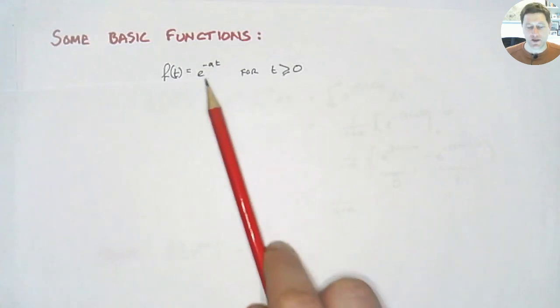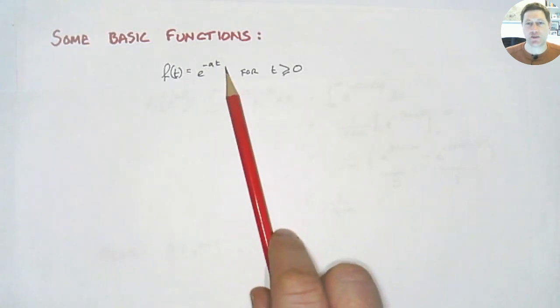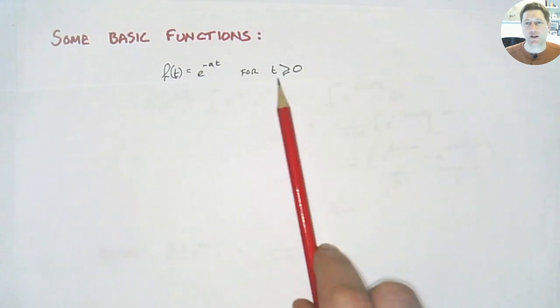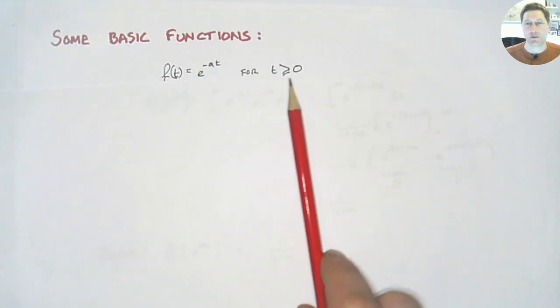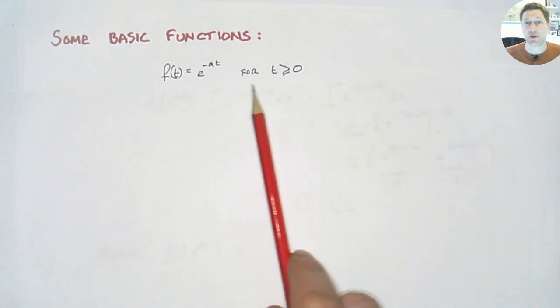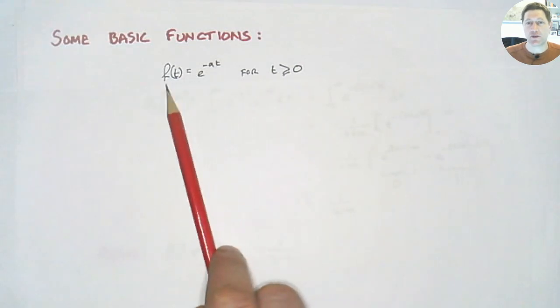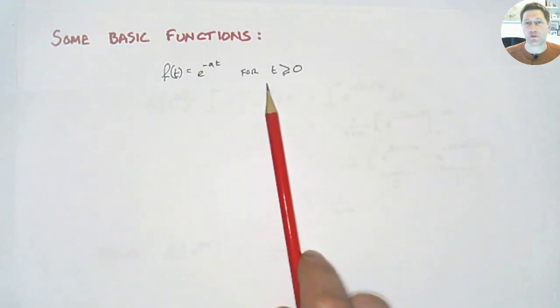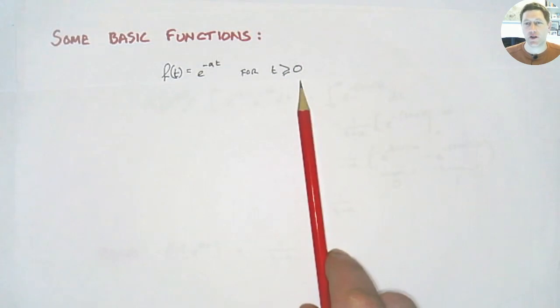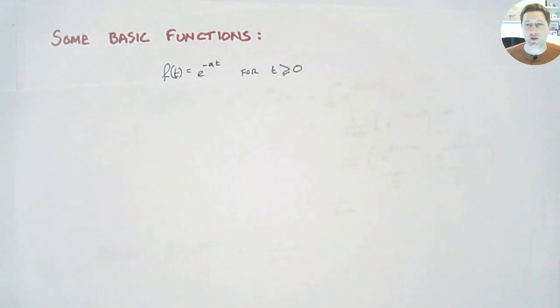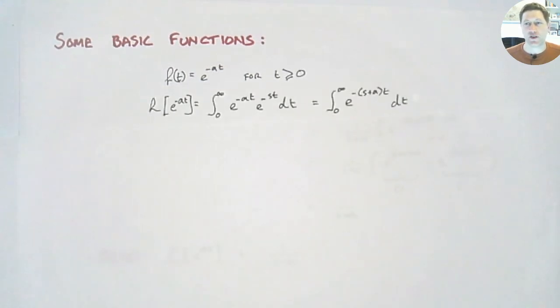So first of all we're going to start again with an exponential function e^(-at). And this is for t ≥ 0. You'll notice that in all of this module we're going to be doing this. We're going to be defining our function but being careful to define the region of time or the region of space at which that function is defined for. And that's because sometimes we're going to encounter discontinuities where the function changes from one form to another. And so we need to be clear about the regions it's applicable to.